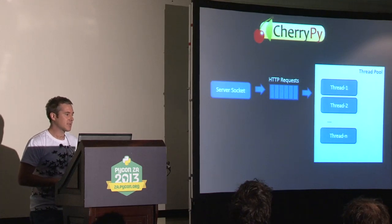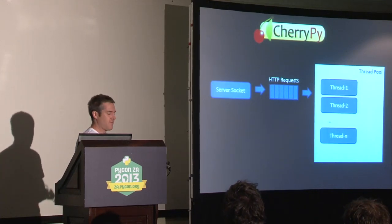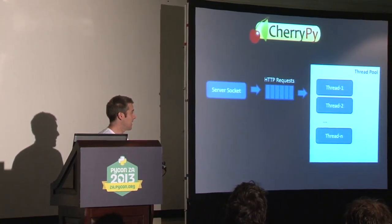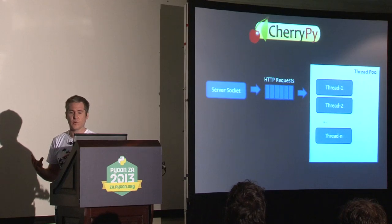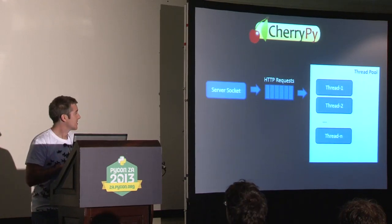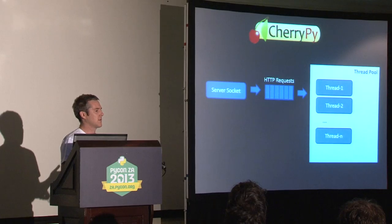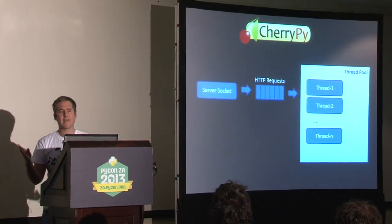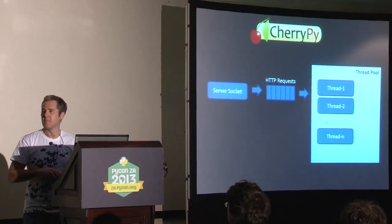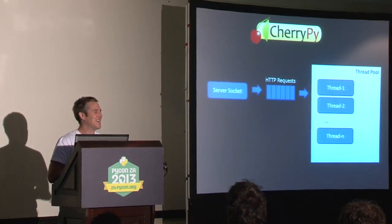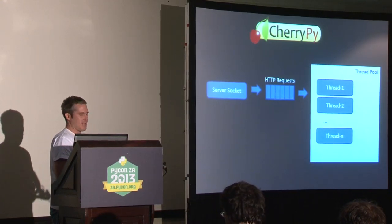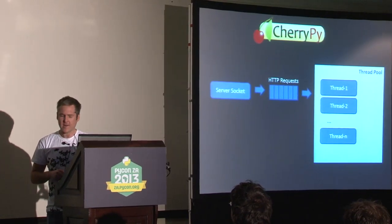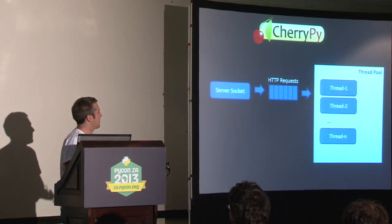As I mentioned, we use CherryPy within j5 as our web server. CherryPy has a fairly standard synchronous request-handling model with a thread pool — you might have encountered something like this before. What that means is that within our application we can process up to N — I think N being 12 mostly — HTTP requests concurrently within the application.